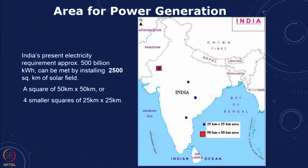However, getting 50 by 50 kilometers of land is difficult. Creating the transmission and distribution lines, creating storage, and in actual practice acquiring land is always difficult. The requirement for land and the requirement for water — for cleaning the panels and in the case of solar thermal even as a working fluid — these are some of the problems in terms of solar penetration.